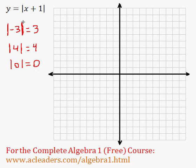So how can we graph this? I'm going to start by just graphing y equals x plus 1, and then I will explain what happens to the absolute value of that function. Right here we have a y-intercept of 1, because y equals mx plus b, b is 1, and our slope here is 1. So we go over 1, up 1, over 1, up 1, and so on. Let me just quickly draw a line here.